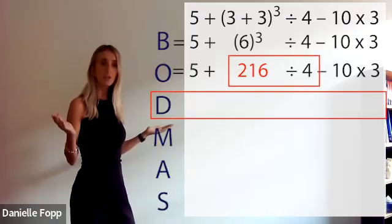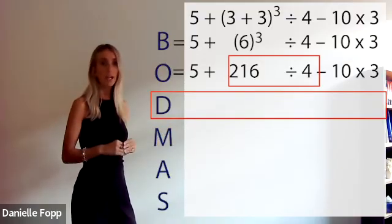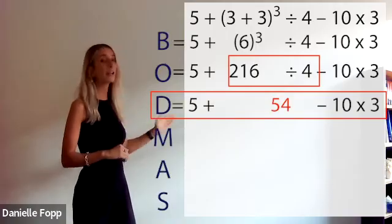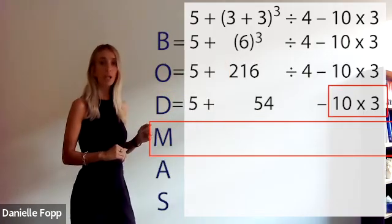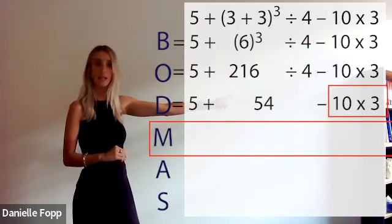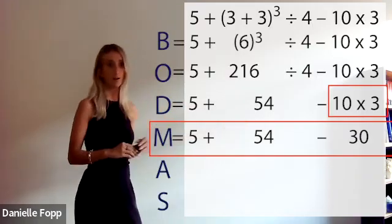Division: 216 divided by 4. Use your calculator and we add that in again. As you can see, we're working through. Multiplication: what's 10 times 3? 30. Write that line in.